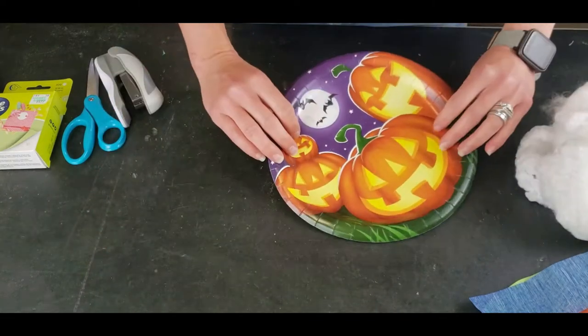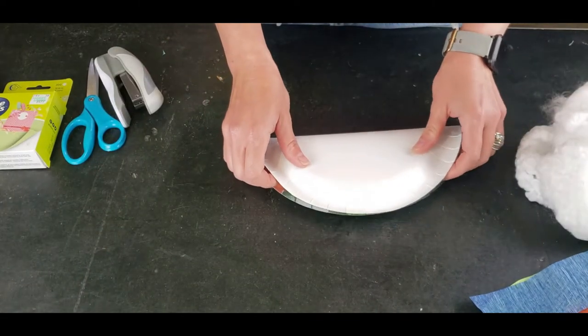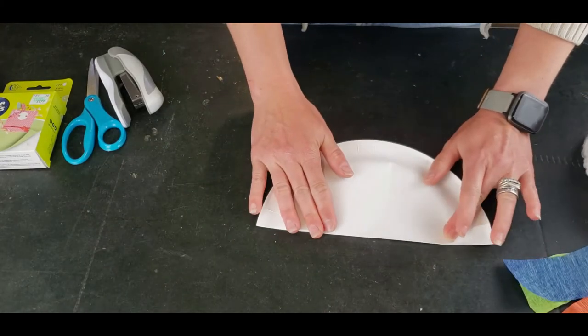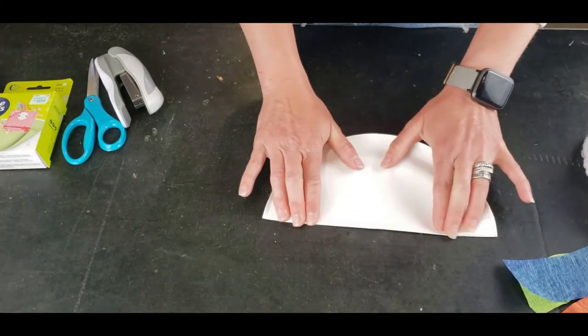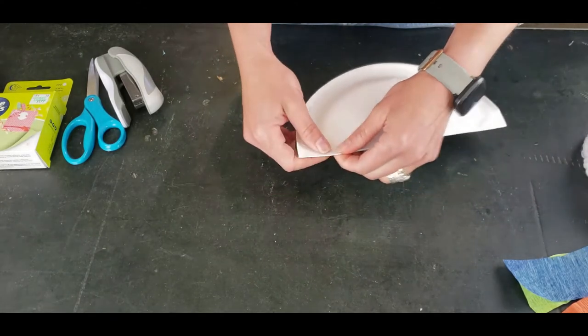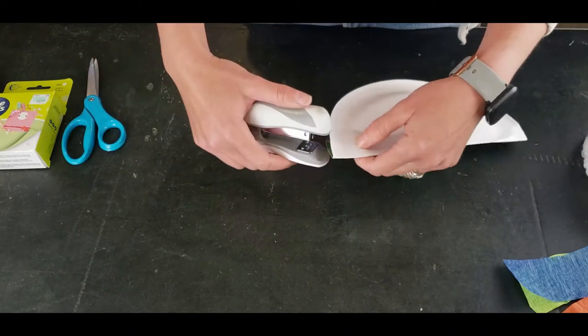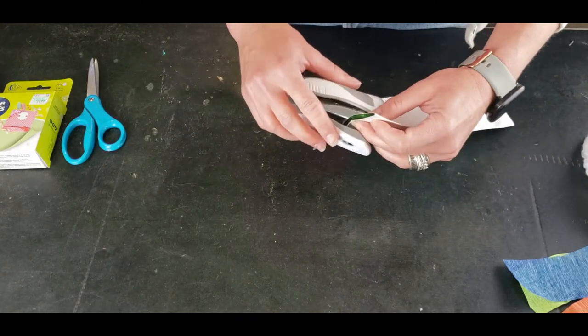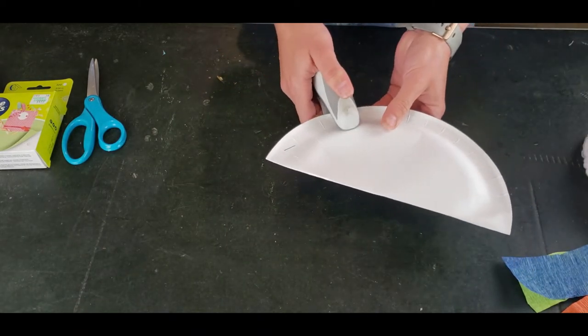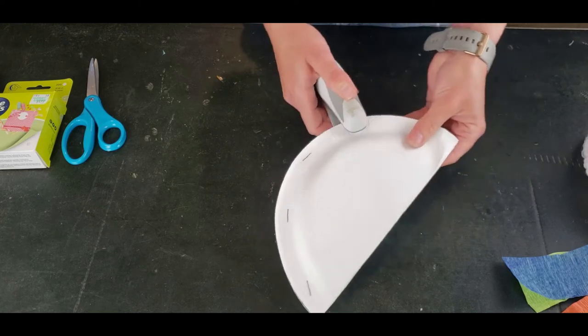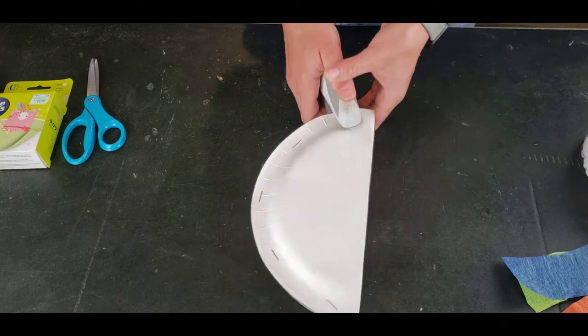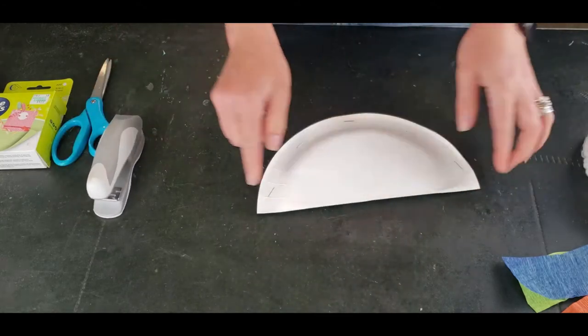To get started, take your paper plate and fold it in half to make a half circle, and this is going to be the base of our cloud. And then we are going to staple it together at the top, or you could use glue dots if you wish. So just place a few staples around the top edge to keep it in the half circle, or you could cut it apart if you want to make more than one.